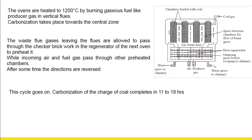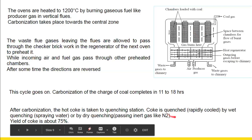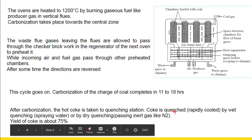This cycle continues and the whole carbonization process takes about 11 to 18 hours for coal to be converted into coke. After carbonization, the coke is taken to the quenching station and rapidly cooled by either wet quenching — spraying water — or dry quenching by passing an inert gas like nitrogen. Dry quenching is preferred because the coke produced is more strong, non-reactive, drier, and contains less dust.